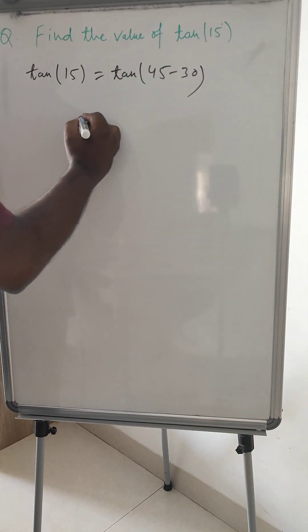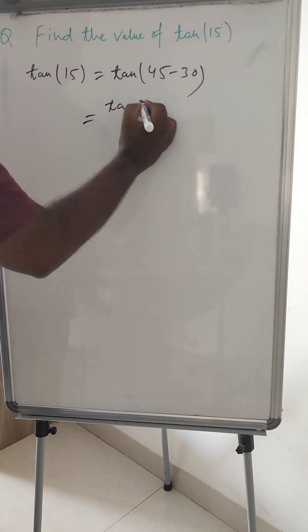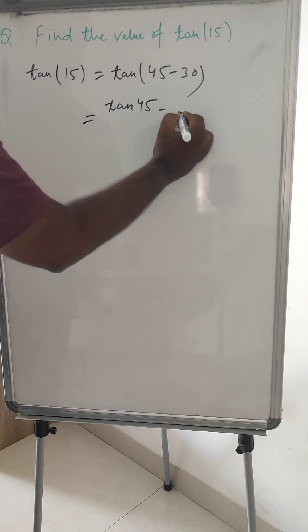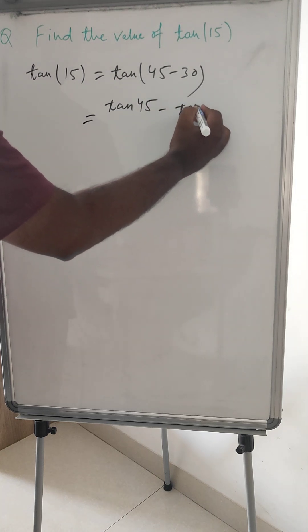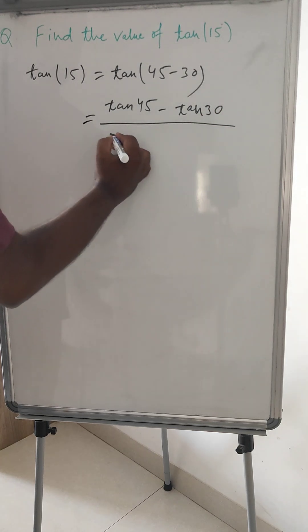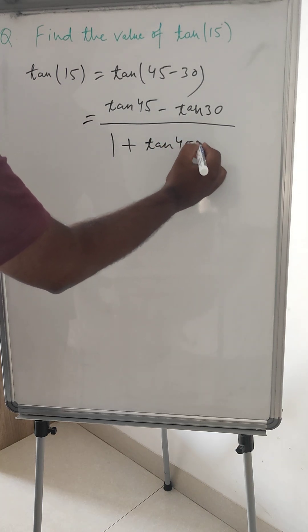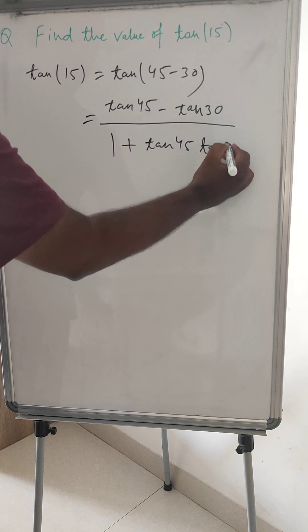It is like tan a minus b, we have to use tan 45 minus tan 30, now 1 plus tan 45 tan 30.